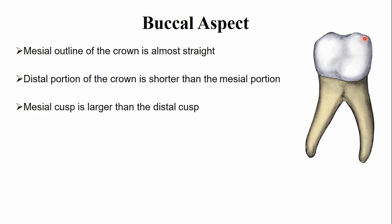There are two cusps: the mesial buccal cusp and the distal buccal cusp. The mesial cusp is slightly larger and higher compared to the distal buccal cusp, which is rounded and slightly smaller. A slight developmental depression is present between these two cusps.